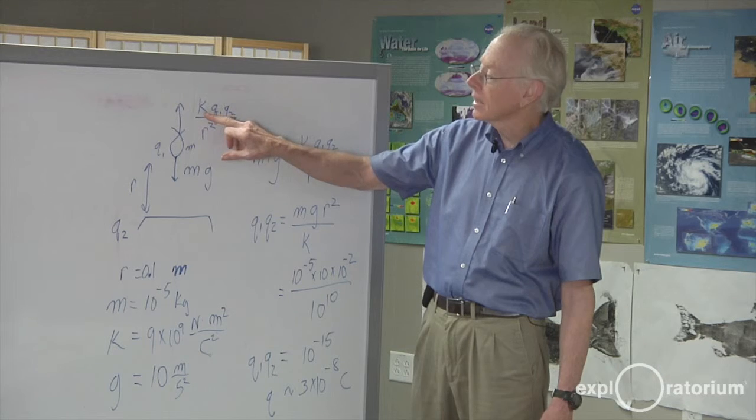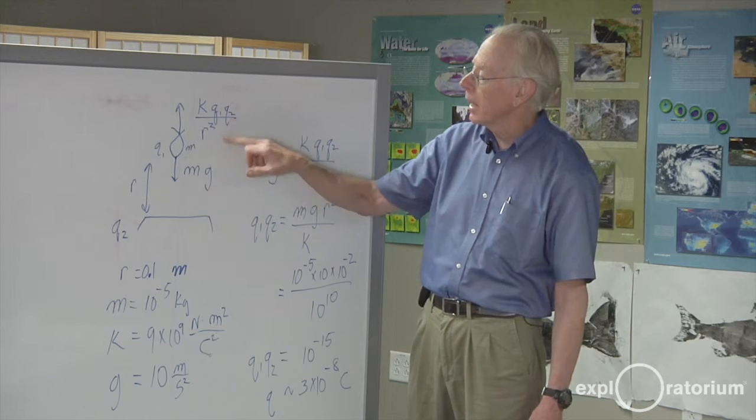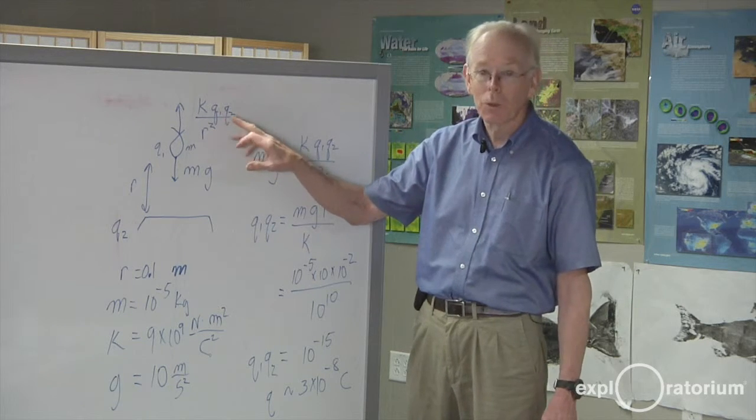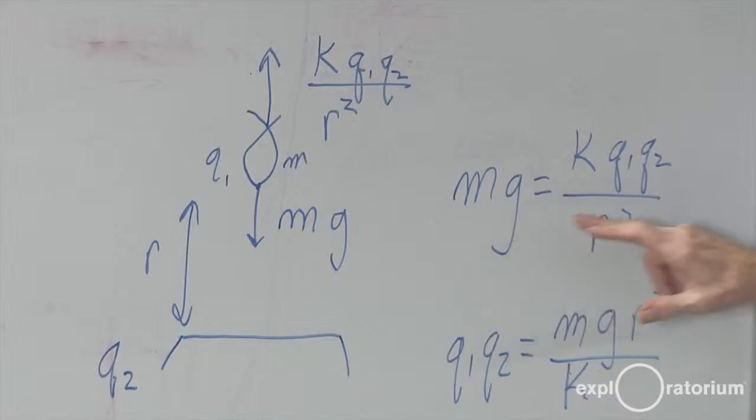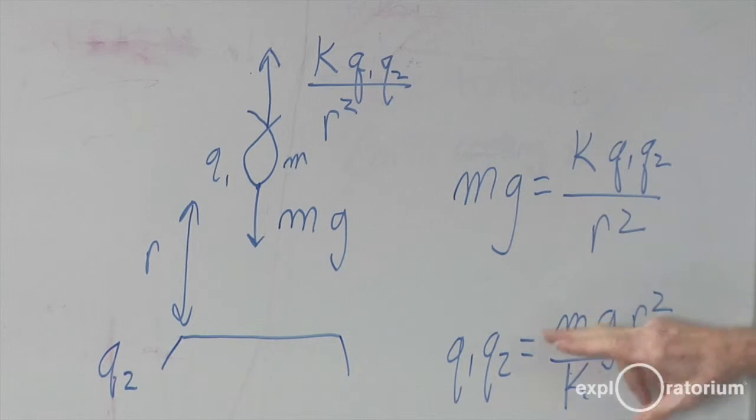And the electrostatic equation is a constant K times the charge on the tinsel times the charge on the pipe divided by the distance between them squared. And I have to set those two equal. The gravity force and the electrostatic lift are equal when the tinsel is flying. And we can rearrange that in this form. It's the same equation, just rearranged.